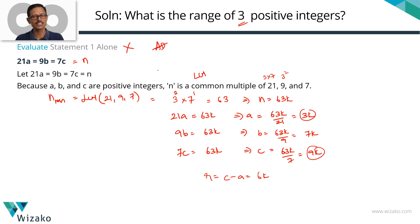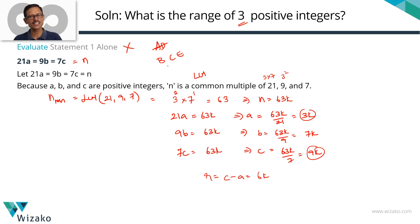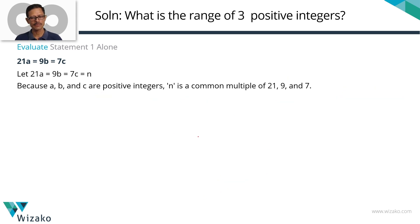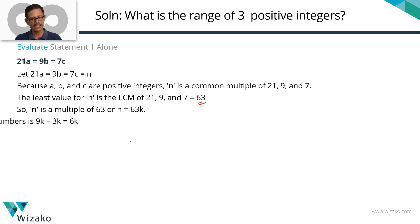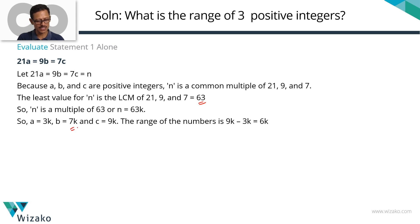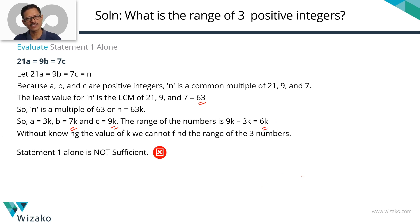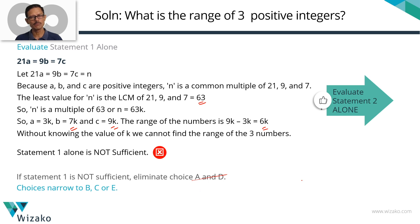Eliminate answer options A and D. We are down to B, C, or E. To summarize: N is a common multiple of 21, 9, and 7; the LCM is 63, so N = 63K. Consequently A = 3K, B = 7K, C = 9K, and the range = 6K. Without knowing K we can't find the range, so statement 1 alone is not sufficient.